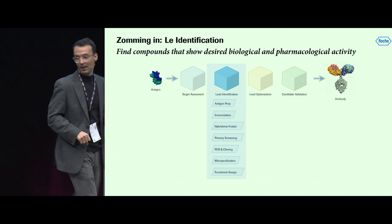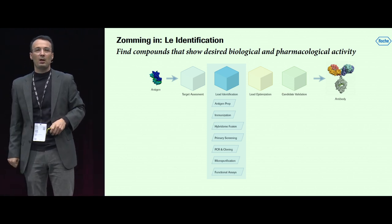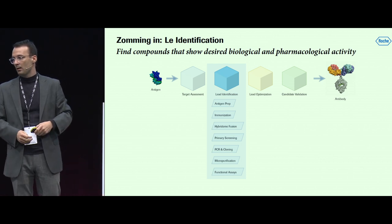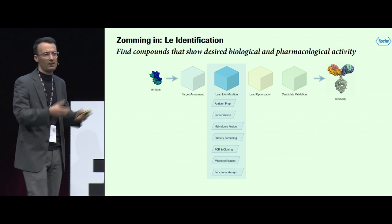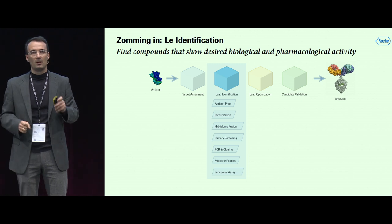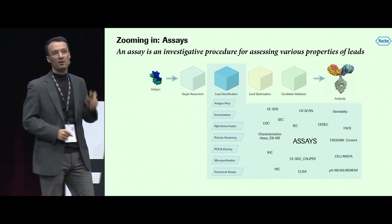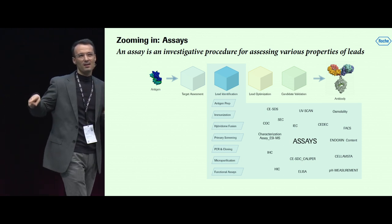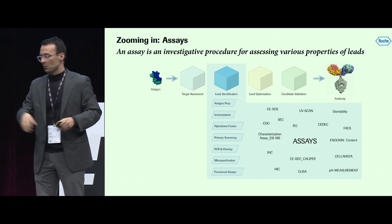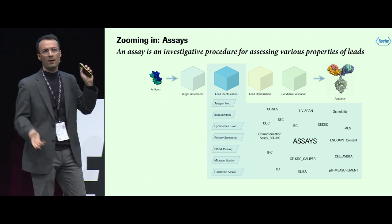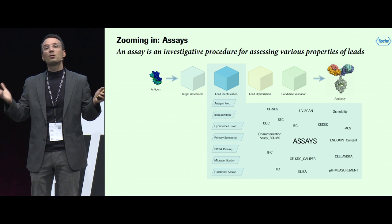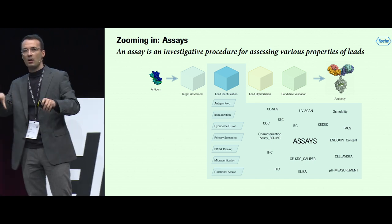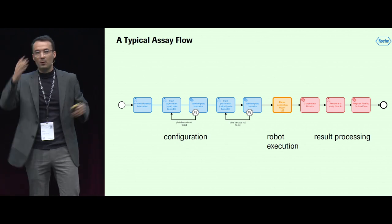Let's continue zooming into the lead identification phase. We see sub-phases: preparing the antigen, immunization, hybridoma fusion, primary screening, amplifying quantity, purifying, and then functional assays — investigative procedures for assessing various properties of these antibodies. We're getting very close to processes now, because behind all these phases there are many assays with different names and purposes. There are about hundreds in the pharma research area, and this is where we get very close to business process modeling.